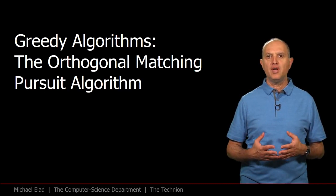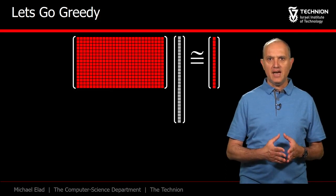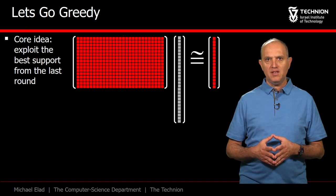We start diving into the greedy methods by presenting an algorithm called the orthogonal matching pursuit. We are looking at the system AX equals B, and we are searching for a sparse solution to it.